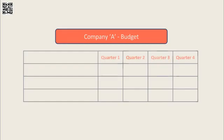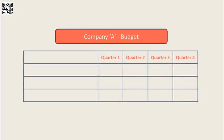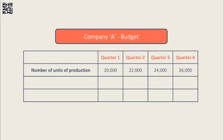Company A has prepared the following budget for the forthcoming year. The budgeted number of units of production in Q1, Q2, Q3 and Q4 is 20,000, 22,000, 24,000 and 26,000 units respectively.